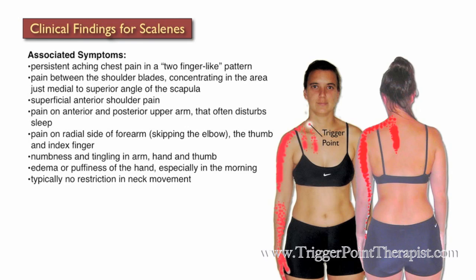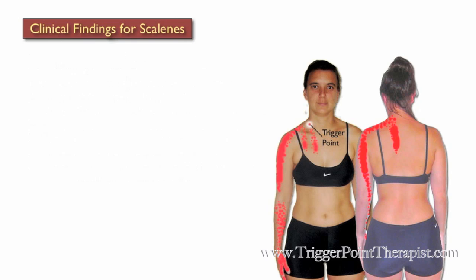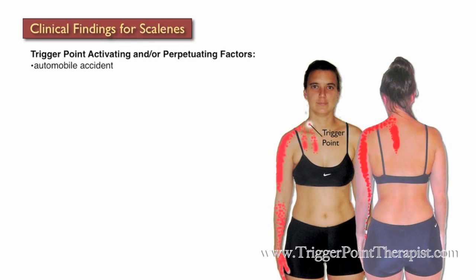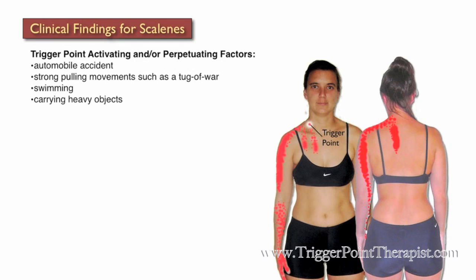Clients with active trigger points in the scalene typically do not have restriction in neck motion as they would with active trigger points in the levator scapula muscle. Some factors that may activate or perpetuate trigger points in the scalene muscles include automobile accidents, strong pulling movements such as playing tug of war, swimming, carrying heavy objects, coughing, scoliosis or lower limb length inequality, and limping because it causes a distortion in the client's posture.